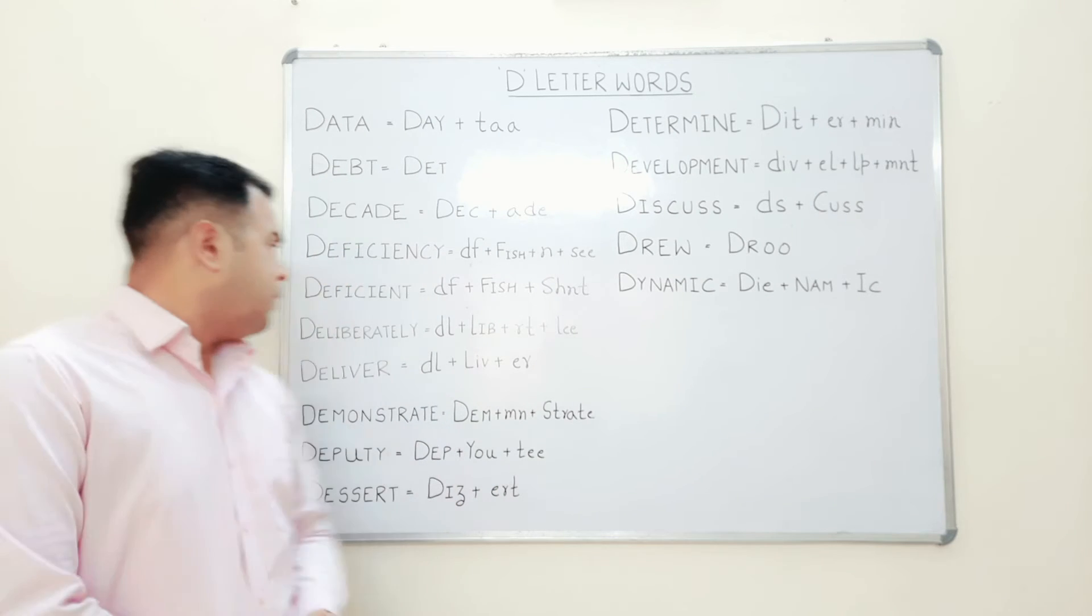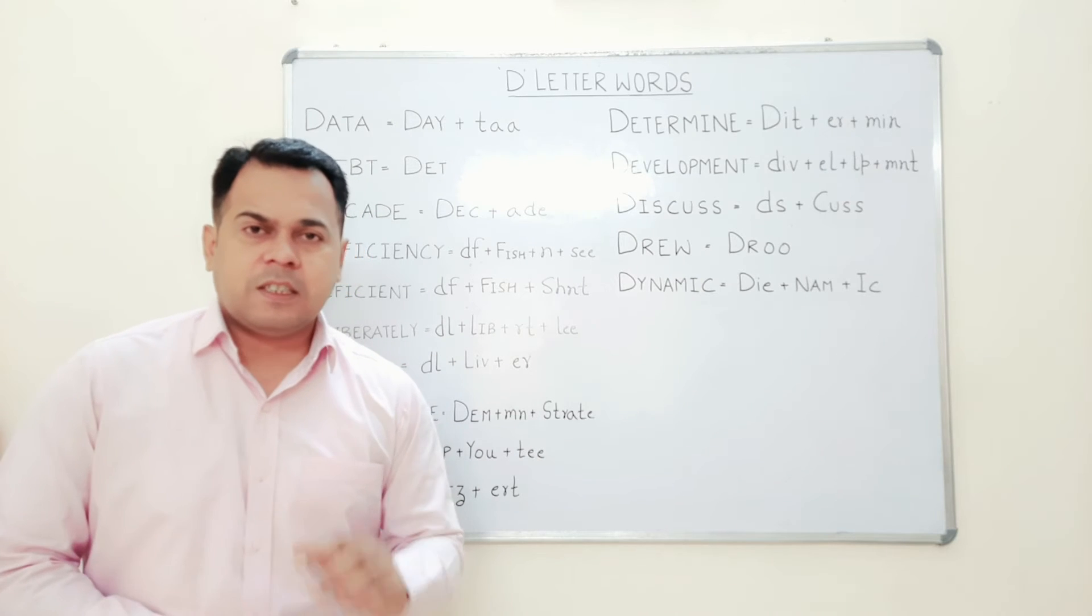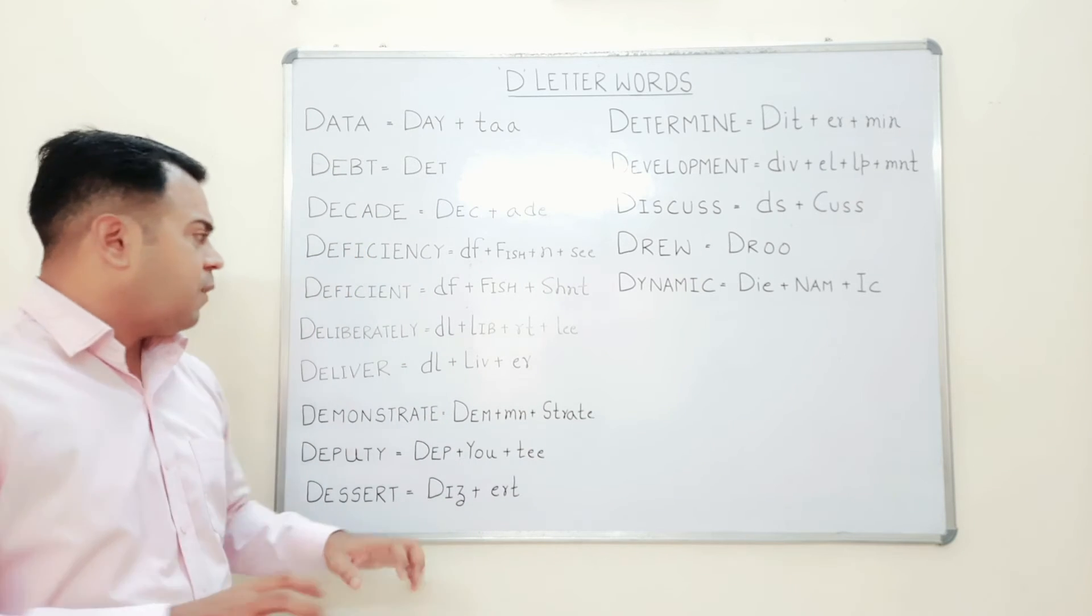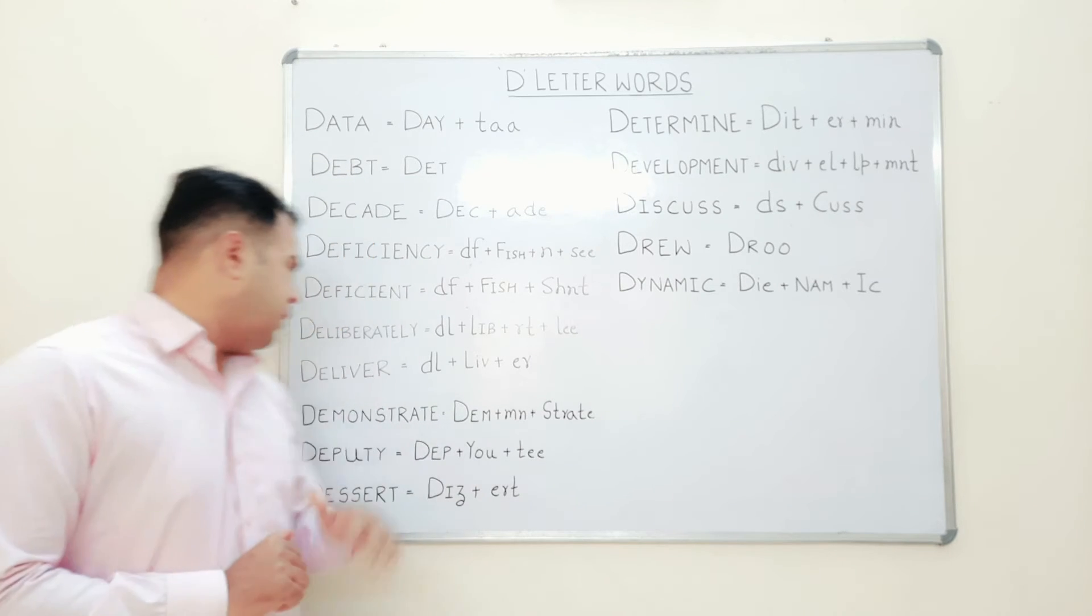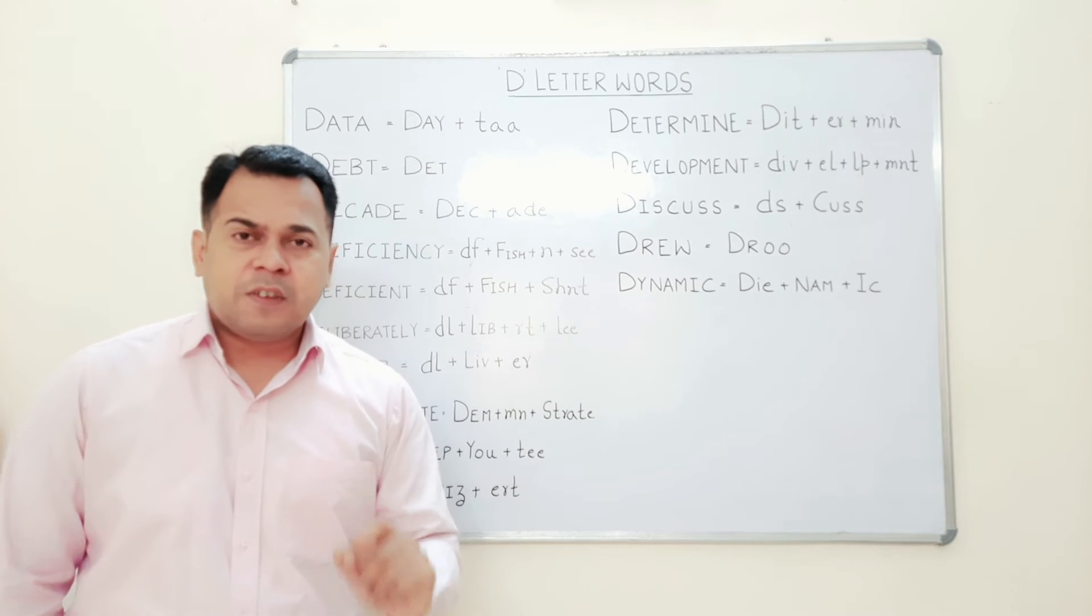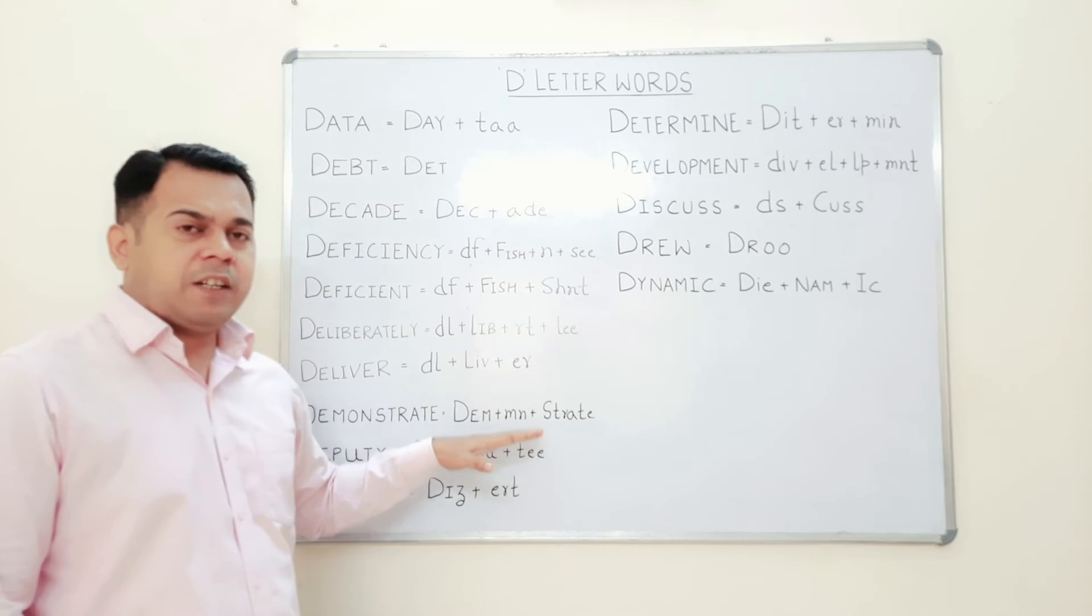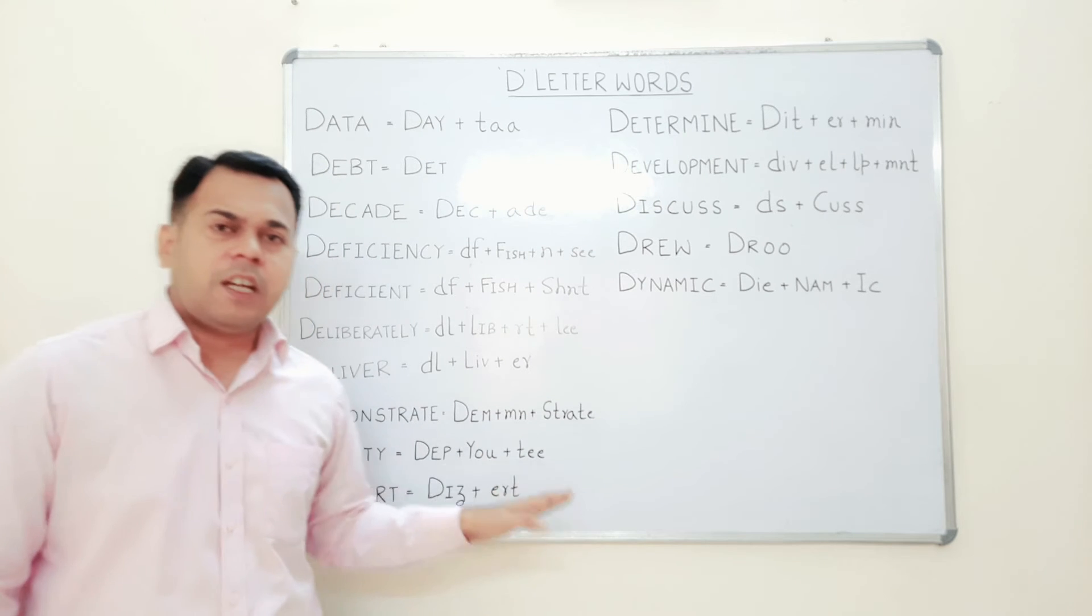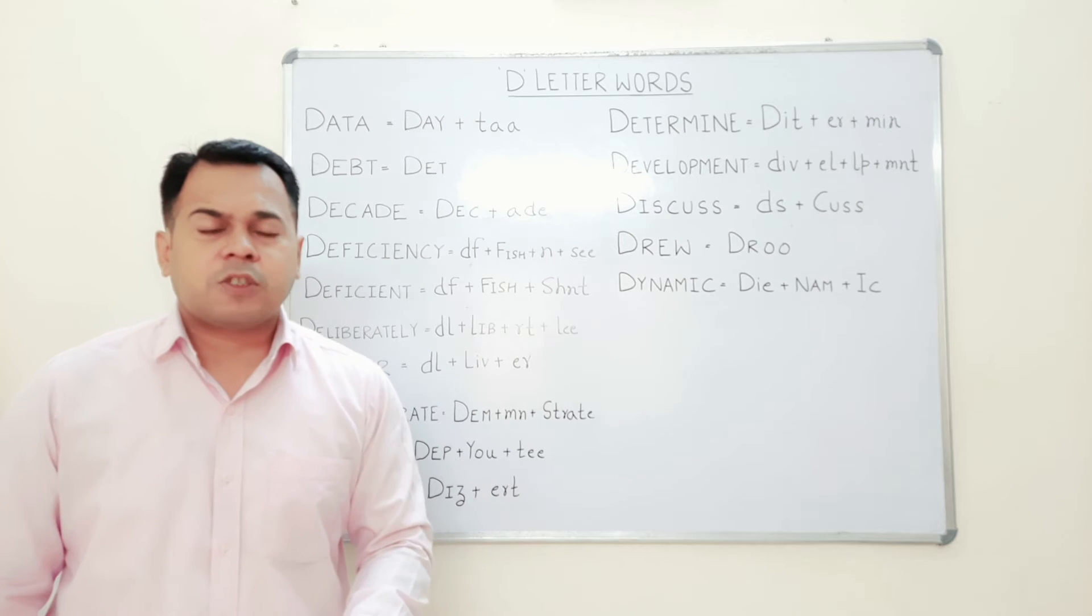Then deliberate - he is a very deliberate person. Then deliver - Amazon delivers the products very soon. Demonstrate - it's not demonstrate, we should say demonstrate. So you should demonstrate all the products properly to increase your sales.